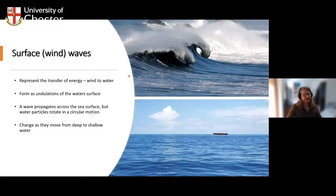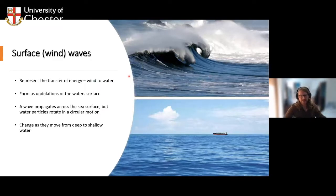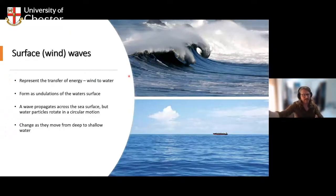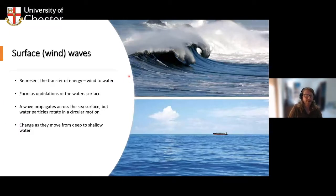Waves are effectively a transfer of energy - a movement within the atmosphere, wind driven ultimately by the sun. That energy is transferred to the oceans and across their surface until most of it is dissipated when it reaches the land. The oceans cover two thirds of the Earth's surface, so that's a huge area accumulating energy from the atmosphere, which eventually finds its way to the coast and causes all the changes and different types of environment we see there.